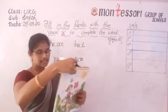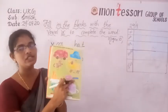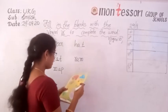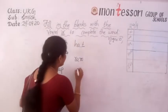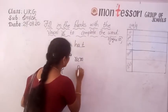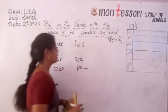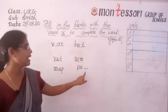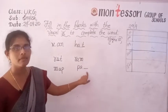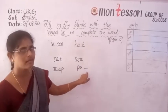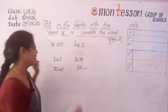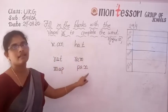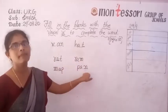Now next. What is this picture? Pan. They have given P-A-dash. What is the spelling of pan? P-A-N. We have to write N — very good. P-A-N, pan. Write with pencil.